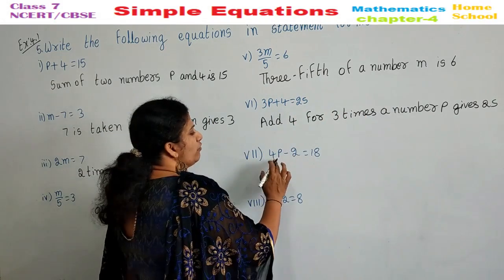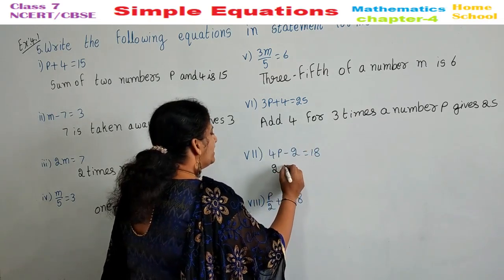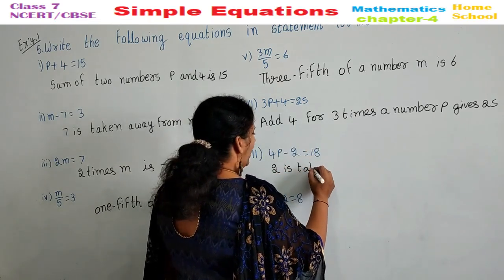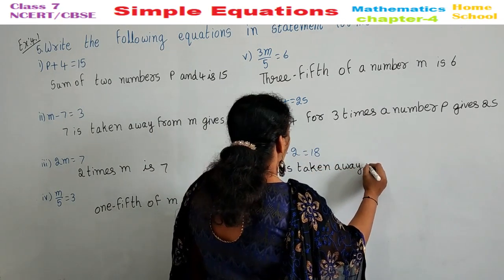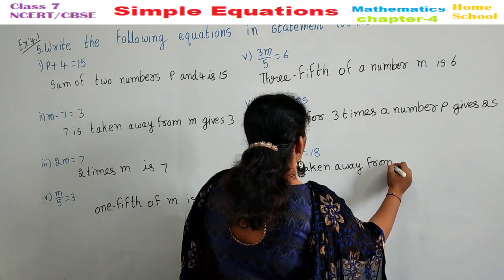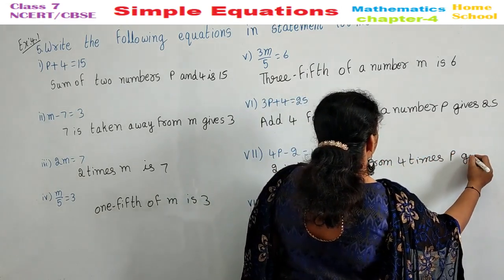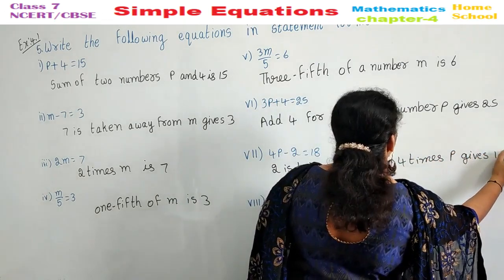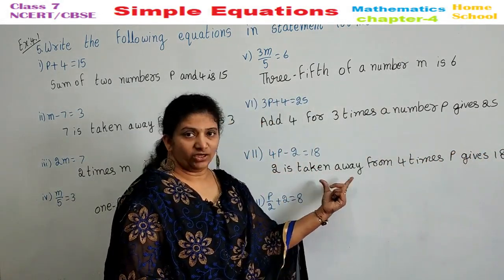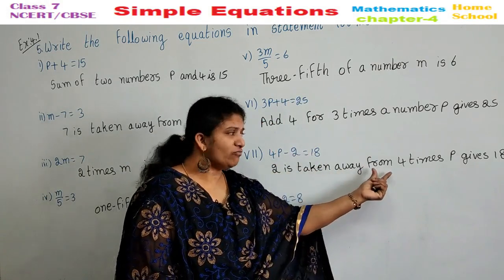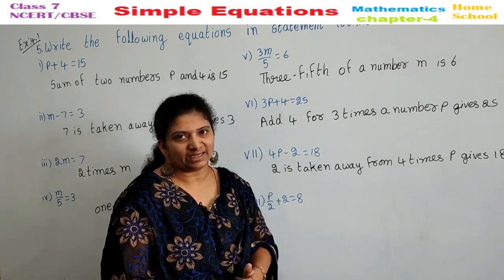Seventh one: 4P minus 2 is equal to 18. 2 is taken away — 2 is subtracted from 4 times P gives 18.